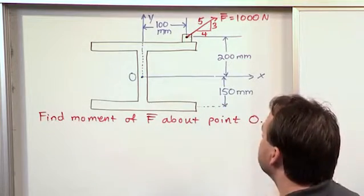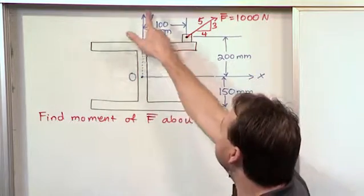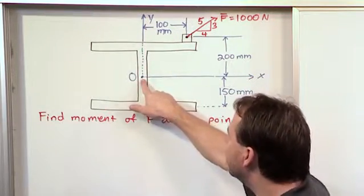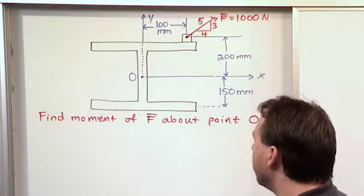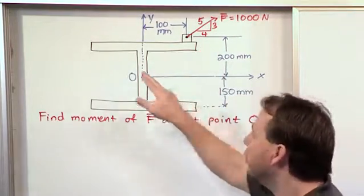So we're given the direction and the magnitude of this force. We're also given all of the directional information that we have. Notice that there's like an x-y coordinate system centered on point O here, which we're calling the origin. And the problem says that we want to find the moment of this force about the point O.